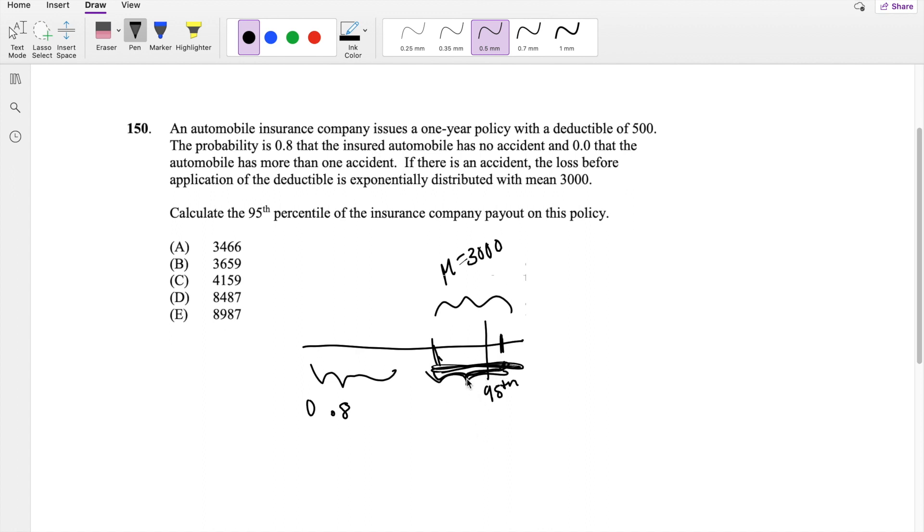Because unless they have an accident, they're not going to be charged. So we have to do it in terms of this. So the whole probability here is going to be 100 minus 80, right? The whole probability here is 100 minus 80 because this right here is 80%.